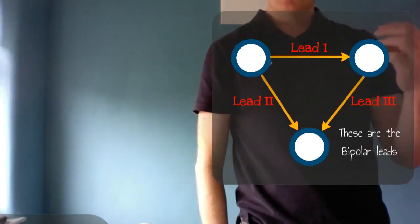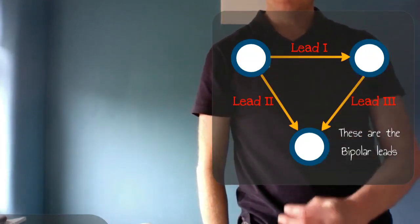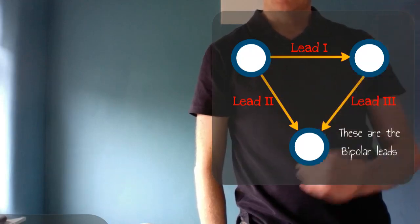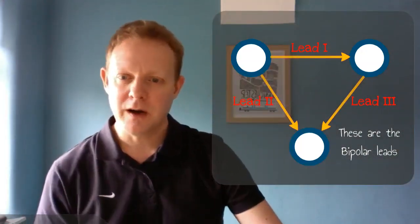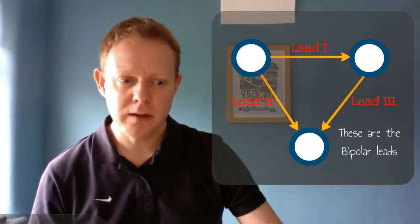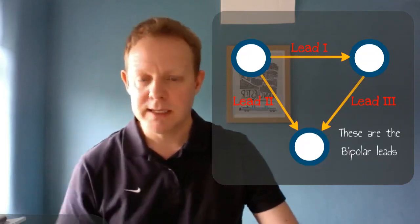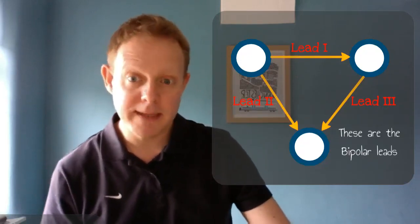And lead 3 starts at the left shoulder and is looking down towards the left foot. So it goes slightly in, and that's why it's going at 120 degrees. It's looking mainly downwards, so it's an inferior lead. And that's what you've got with those three leads. Lateral lead 1 and 2 inferior leads, lead 2 and 3, because they're looking predominantly downwards.